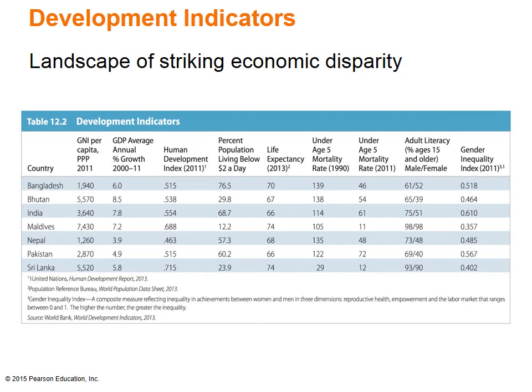Core areas of development have emerged, surrounded by peripheral areas that have lagged behind, creating landscapes of striking economic disparity. Looking at the percent of population living below $2 per day, Bangladesh at 76.5% is one of the highest in the world, while only 12.2% in the Maldives. Another striking difference is adult literacy — Bangladesh is on the low end of the spectrum while Sri Lanka is on the high end. There is also a striking disparity in the under-age-5 mortality rate across countries in the region.